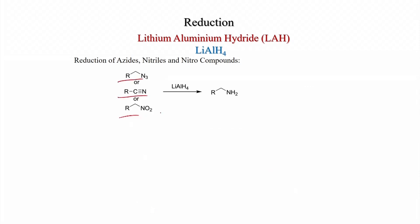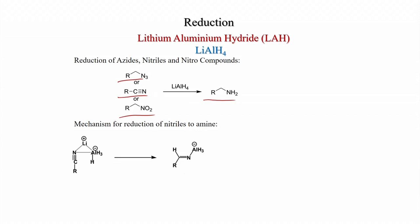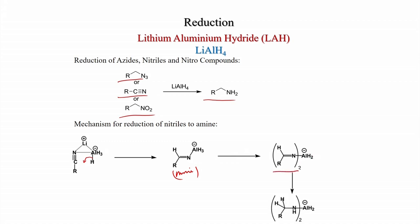Reduction of azides, nitriles, and nitro compounds: azides, nitriles, and nitroalkanes all give amines upon LiAlH4 reduction. Mechanism of nitrile to amine reduction: nitrogen binds to both lithium and aluminum; hydride delivery generates an imine with an Al–N bond. This imine can reduce another nitrile molecule. After all reductions and protonation, the free primary amine is obtained.